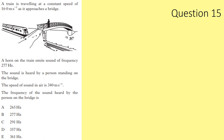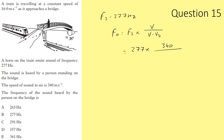Question 15. A train travels at 16 m/s towards a bridge, emitting sound at 277 Hz. Speed of sound is 340 m/s. Using the Doppler equation: f_observed = f_source × v/(v − v_s) = 277 × 340/(340 − 16) = 277 × 340/324 ≈ 291 Hz. Answer: C.